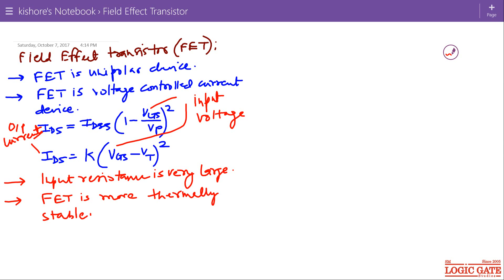And that increase in resistance reduces the drain to source current. Hence FET is more stable as compared to BJT as far as temperature is concerned.